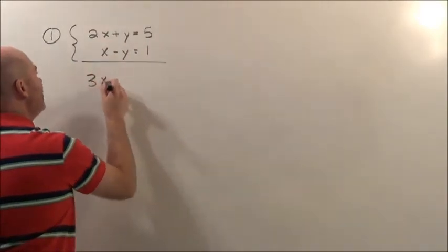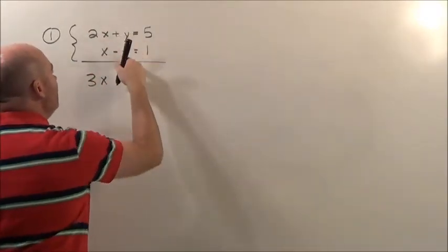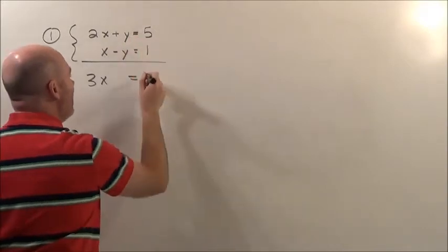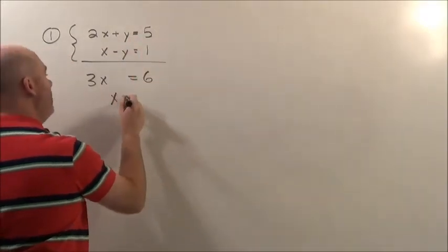I add them together. 2x and an x, that's 3x equals, that goes away, they cancel out right there. 5 plus 1 is 6. Boom. X is 2.